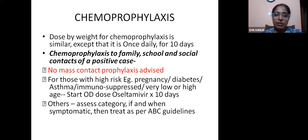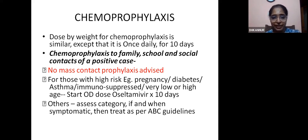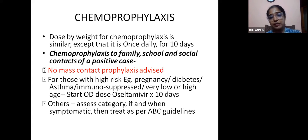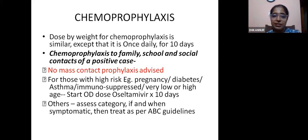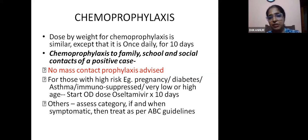Chemoprophylaxis: no mass contact prophylaxis is advised. If given, it is by weight, similar to adult dose but only once daily for 10 days. Prophylaxis is only for high-risk patients: those in contact with influenza-like illness or documented influenza, patients who are pregnant or have comorbidities. For others, assess, follow up, and once symptoms develop, categorize as A, B, or C and manage accordingly.